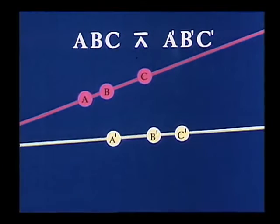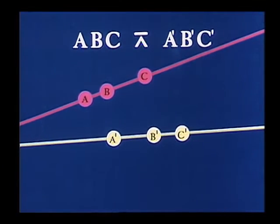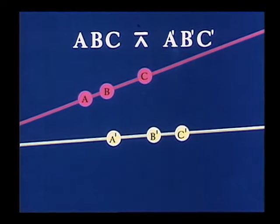This notation doesn't show the perspectivities, for there are different perspectivities whose products map A, B, C onto A prime, B prime, C prime.